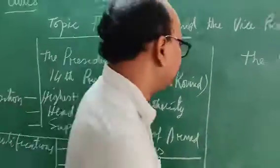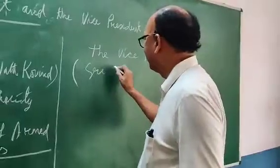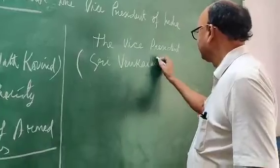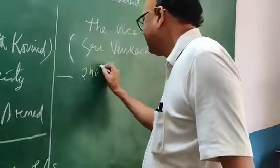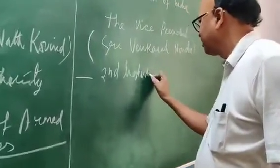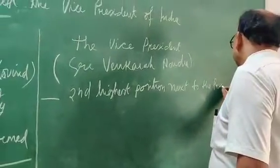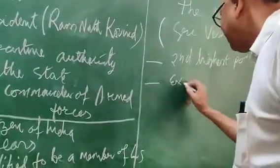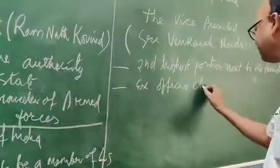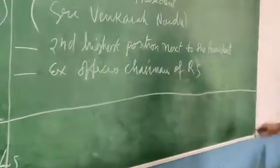Now let's see what about the Vice President. What is his position? The name of the Vice President is Sri Venkaiah Naidu. He is also the 14th Vice President of our country. He has the second highest position, next to the President. The President is the first citizen of India, the Vice President is the second citizen of India, and he is the ex-officio Chairman of Rajya Sabha. This is the position of the Vice President of India.